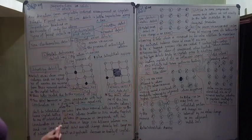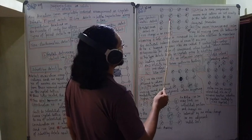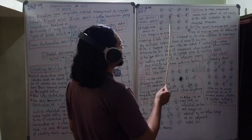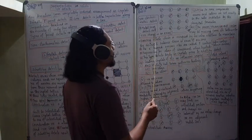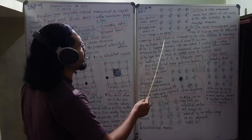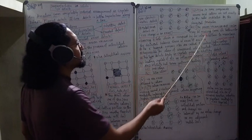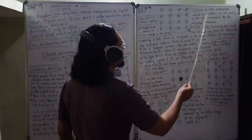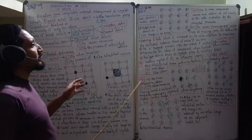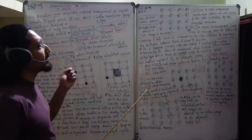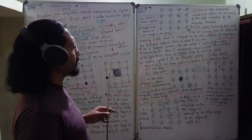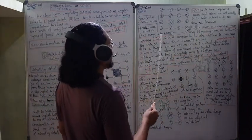When an anion is missing from its lattice site, it leaves a hole which is occupied by an extra electron to maintain electrical neutrality. This results in an excess of positive ions. The electrons trapped at these anionic sites are called F-centers or Farbe-centers — 'Farbe' meaning color in German. These F-centers are responsible for the color of compounds when heated.